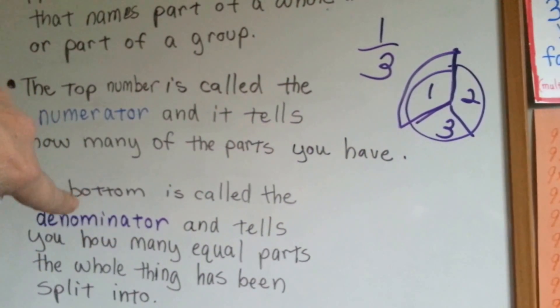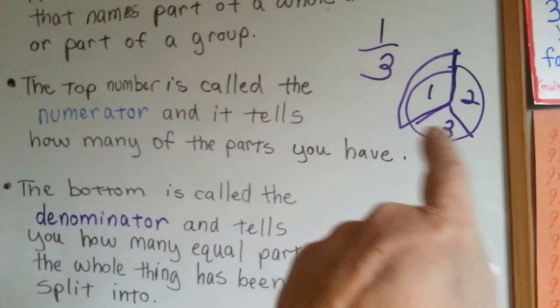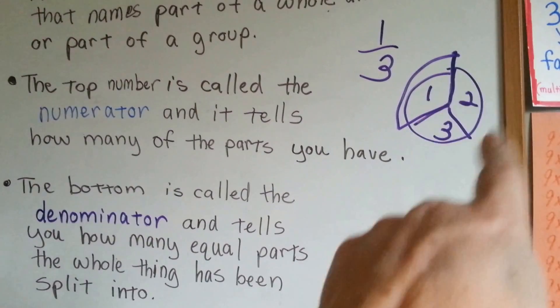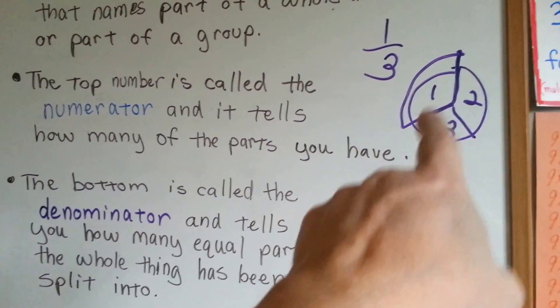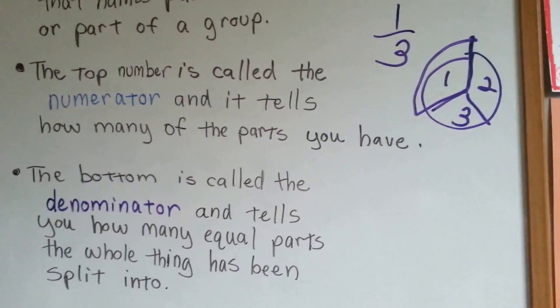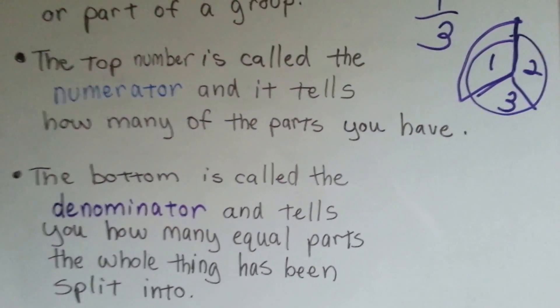The denominator tells you how many parts there are in all. This bottom one says this is how many parts there are in all. The top one tells you how many you have. Numerator and denominator.